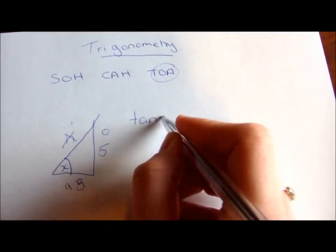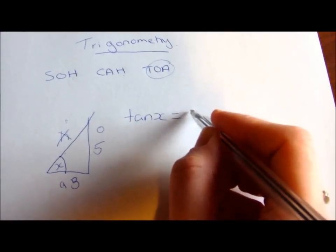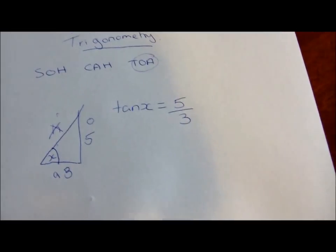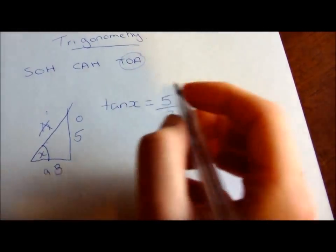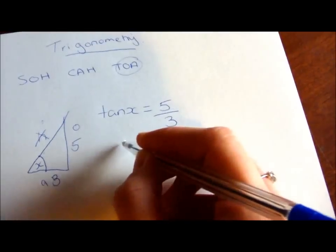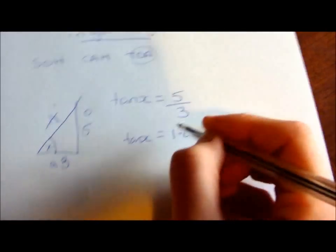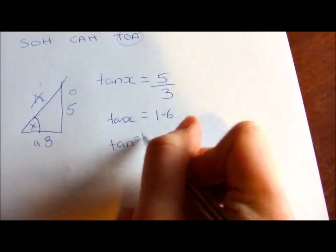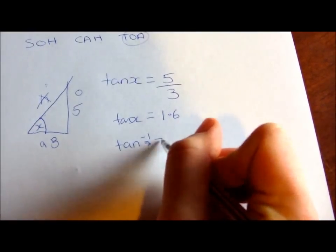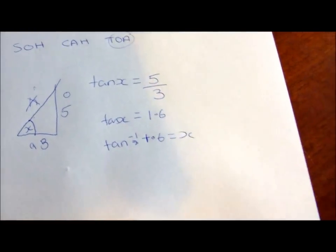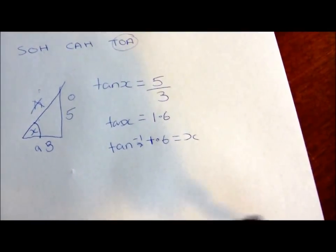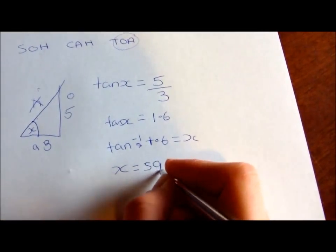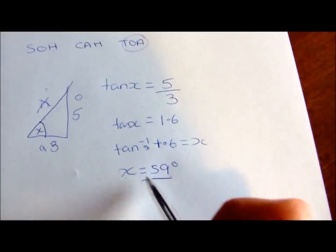So tan of x, which we don't know yet, equals opposite — which is 5 — divided by adjacent — which is 3. So 5 divided by 3 gives you 1.6. So we have to do an inverse of tan, which is tan minus 1, of 1.6 equals x. Let me do that on a calculator. Tan minus 1 of 1.6 gives x = 59 degrees, which is that angle.